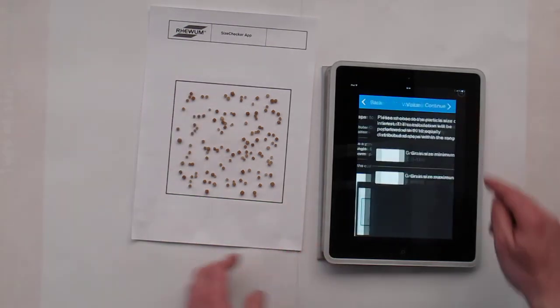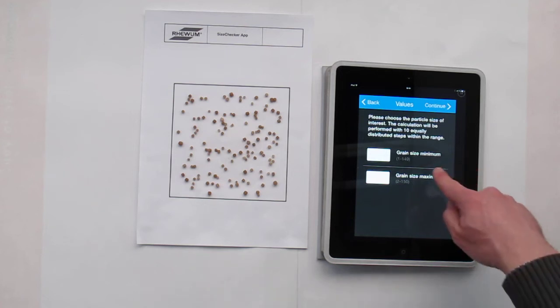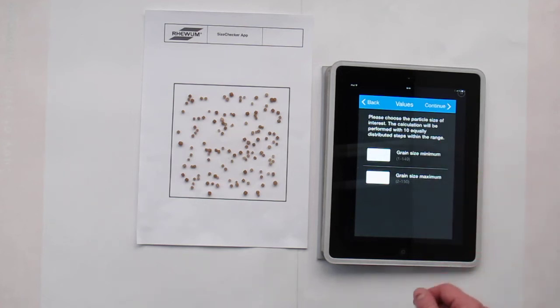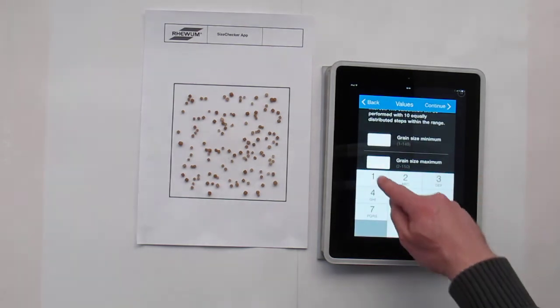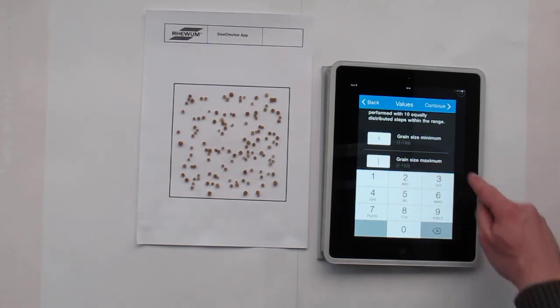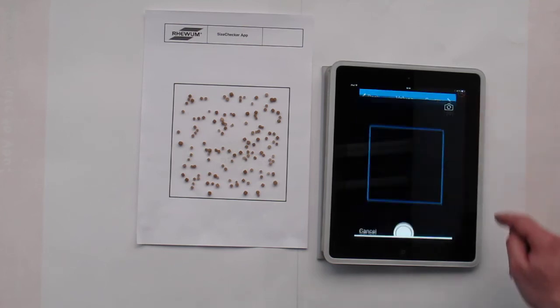Now we can continue and choose the minimum and maximum grain size. We will choose here, for example, one millimeter and as the maximum grain size, five millimeters. Then press continue.